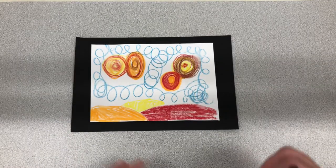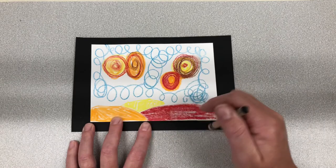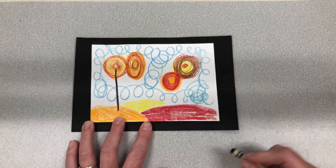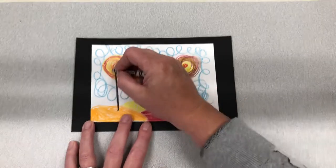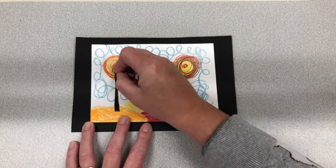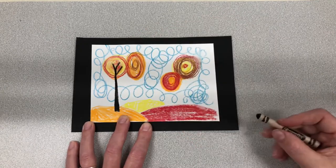Now it's time for the tree trunks. Those are the parts that connect the tree to the ground. So I want to think about how a tree trunk comes down into the ground. It doesn't look like a lollipop. It kind of spreads out a little bit at the bottom and sometimes even splits into branches at the top.